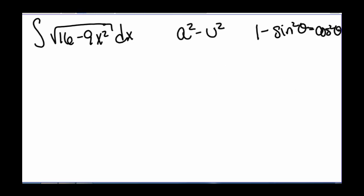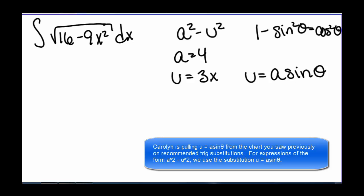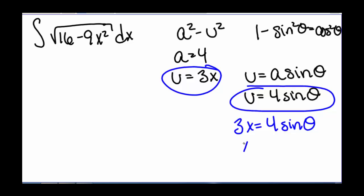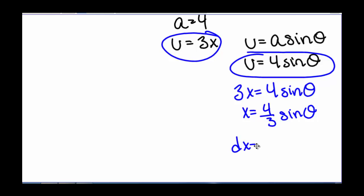In this case, we have that a equals 4 and u equals 3x. So we have that u also equals a times sine of theta. And in this case, a is 4, so u equals 4 sine of theta. This means that 3x equals 4 sine of theta. So now we have a direct relationship between our x and our theta: x equals 4 divided by 3 times sine of theta. Finding the derivative, we have dx equals 4 thirds cosine of theta d theta.